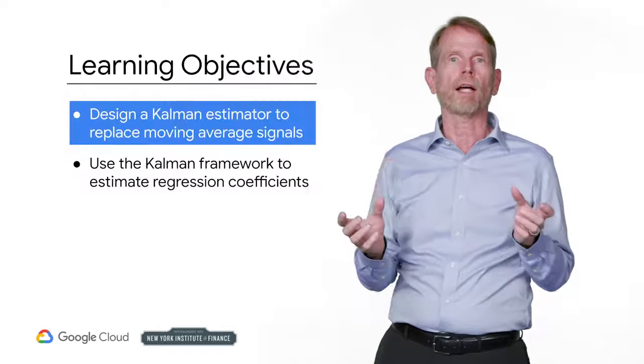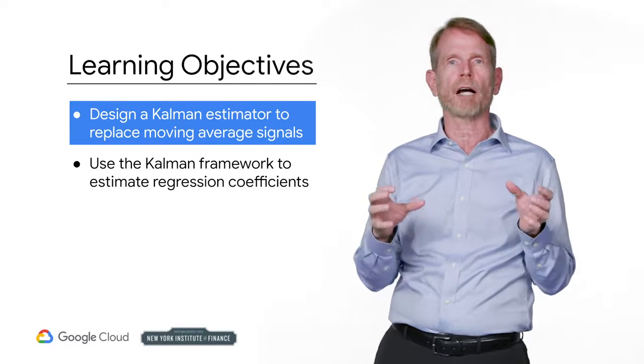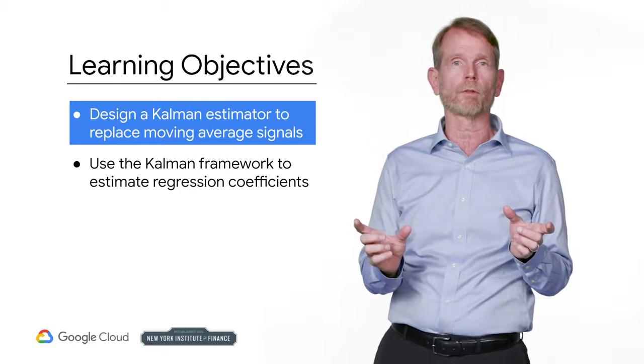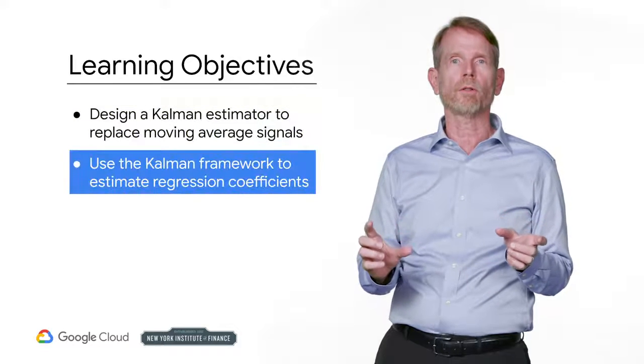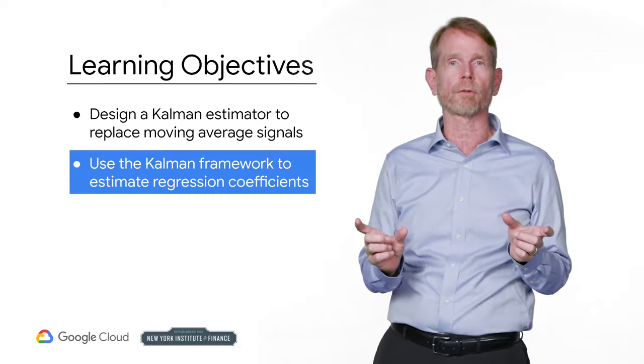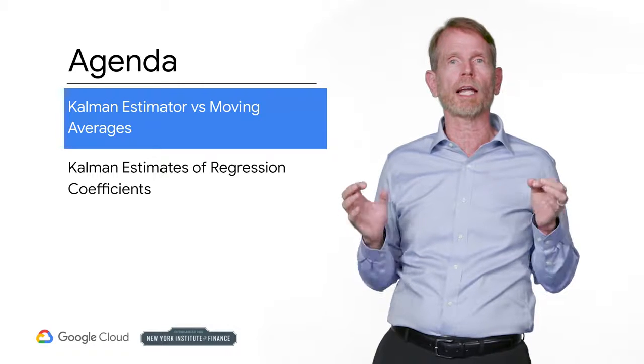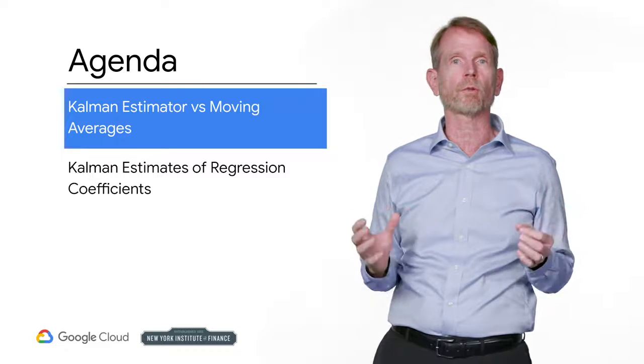We will design a Kalman estimator and compare its value to moving averages calculated with varying time windows. We will also use the Kalman framework to estimate regression coefficients. Kalman estimators are used in momentum strategies where a trading signal is generated by a moving average crossover. They are also used to dynamically adjust hedge ratios in a mean reverting trading strategy.